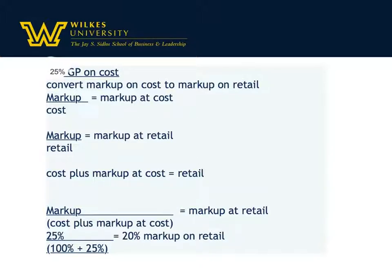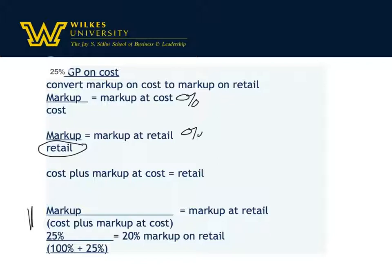The markup amount divided by cost gives the percent markup at cost, and markup divided by retail gives the markup percent at retail. Cost plus markup at cost gives you the retail price. So substituting cost plus markup at cost into the retail formula, we get markup divided by (cost plus markup at cost) to get markup at retail. Given 25% markup at cost, we divide by 100% plus 25%, and end up with 20% markup at retail.